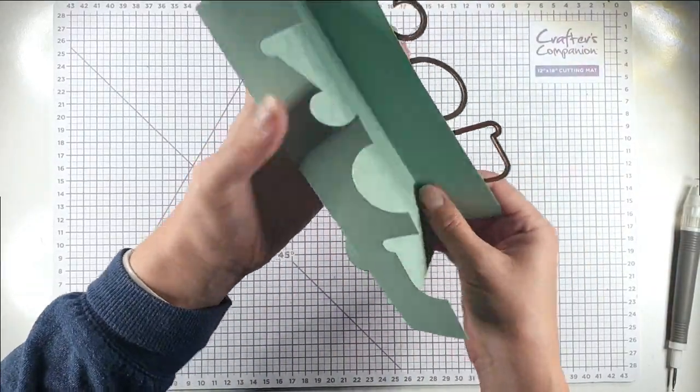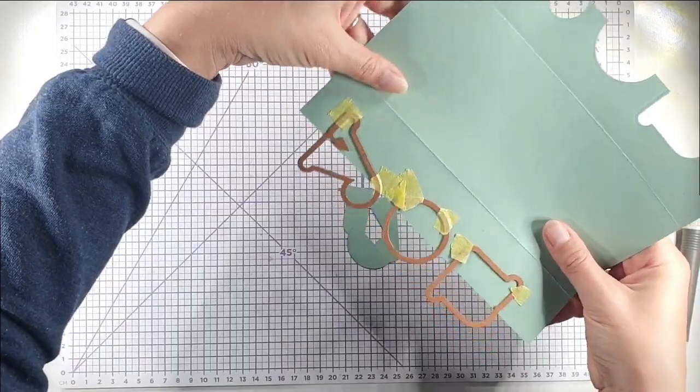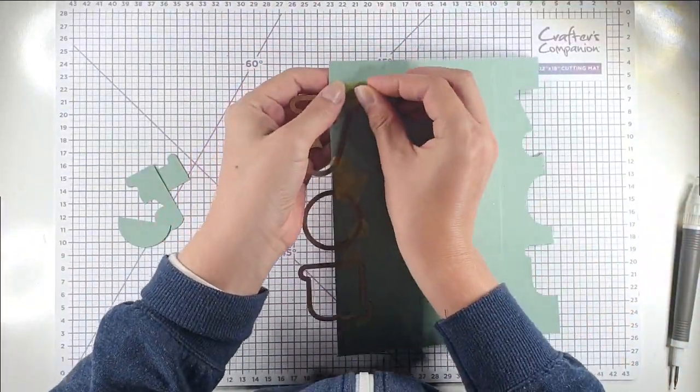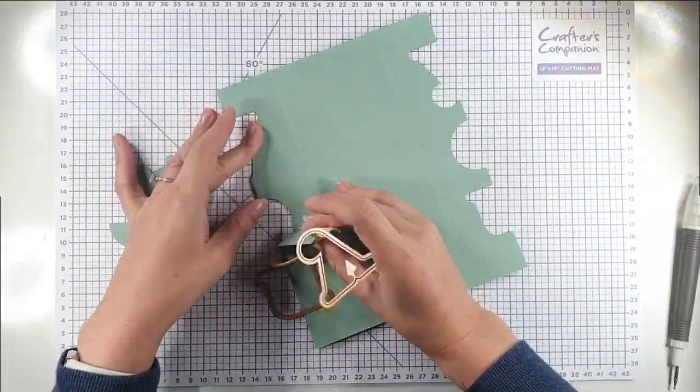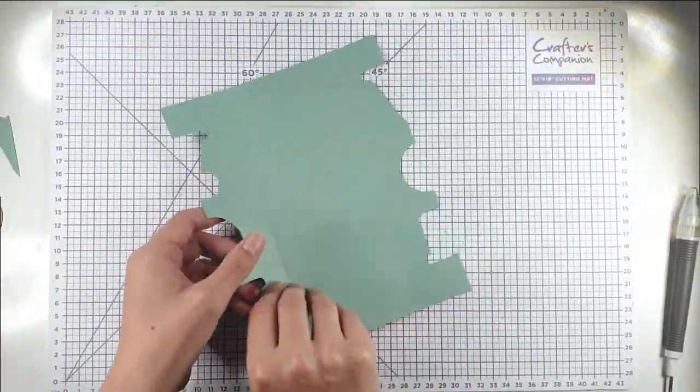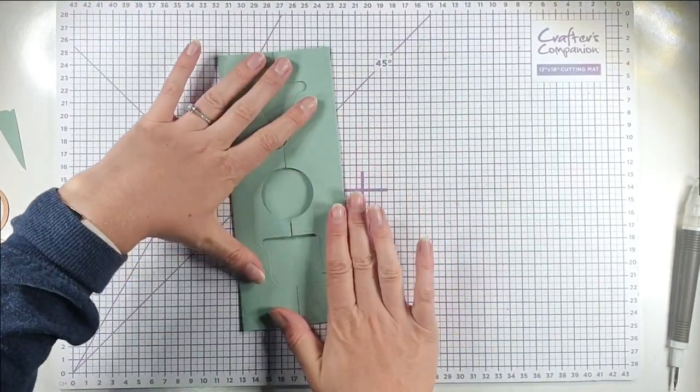So you can see now that side's die cut, and now we're going to open it back out and put it through to die cut this side as well. So now I can just remove these dies. Then when I close these back up again you'll see that U goes straight down the middle.